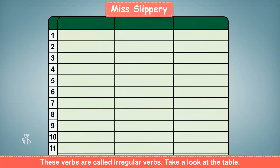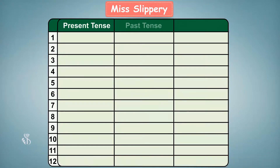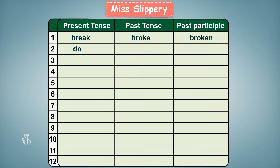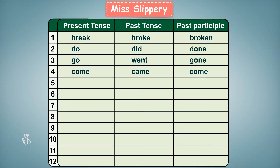Take a look at the table: present tense, past tense, past participle. Break, broke, broken. Do, did, done. Go, went, gone. Come, came, come. Sing, sang, sung.